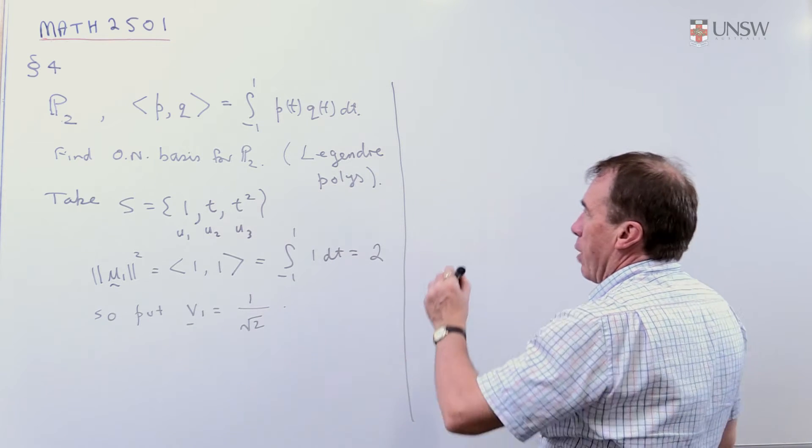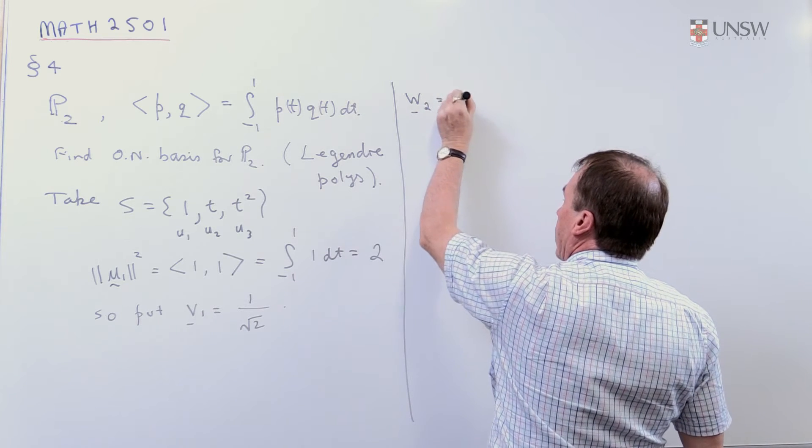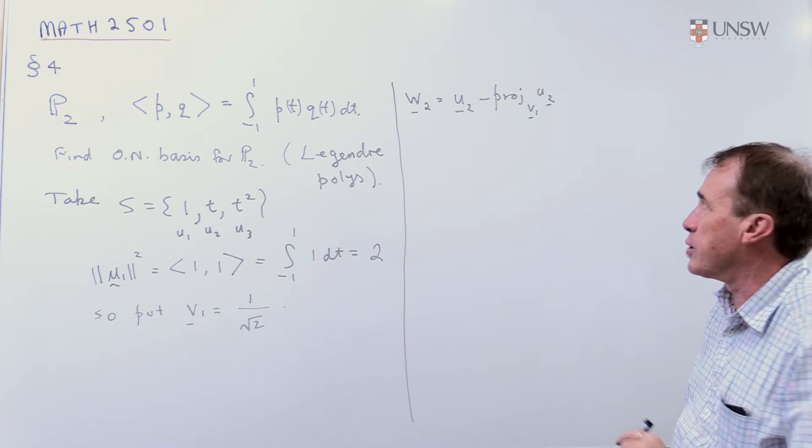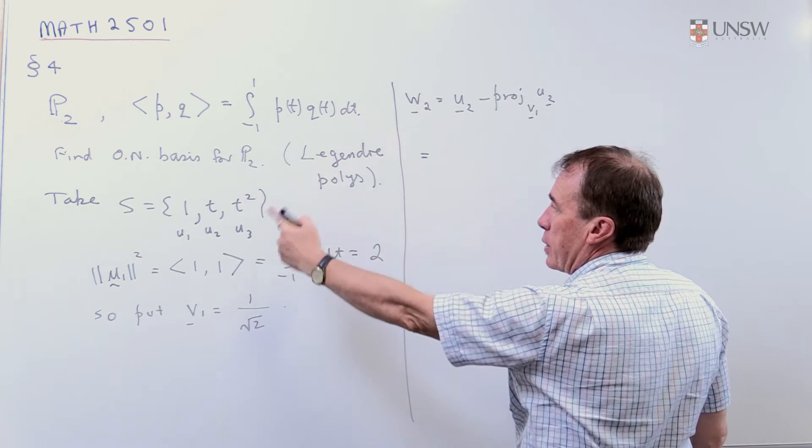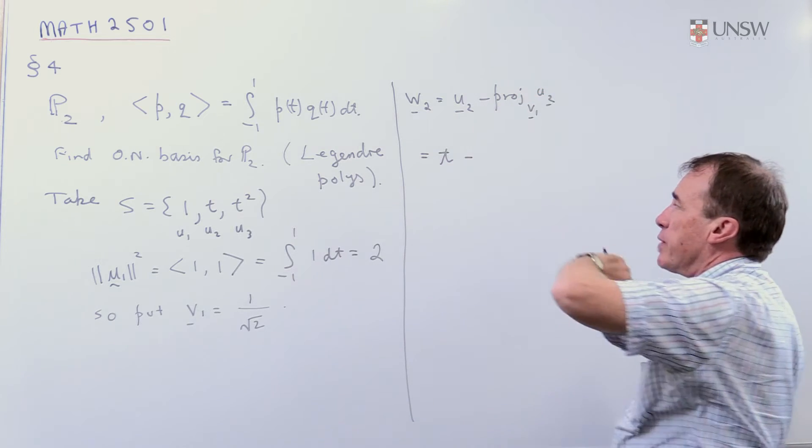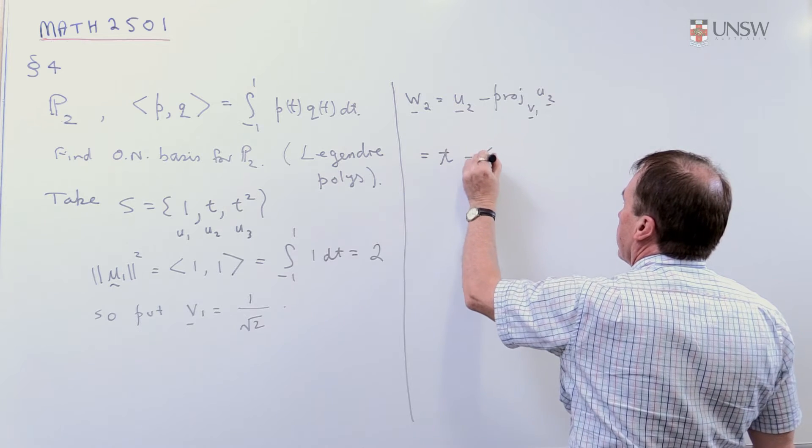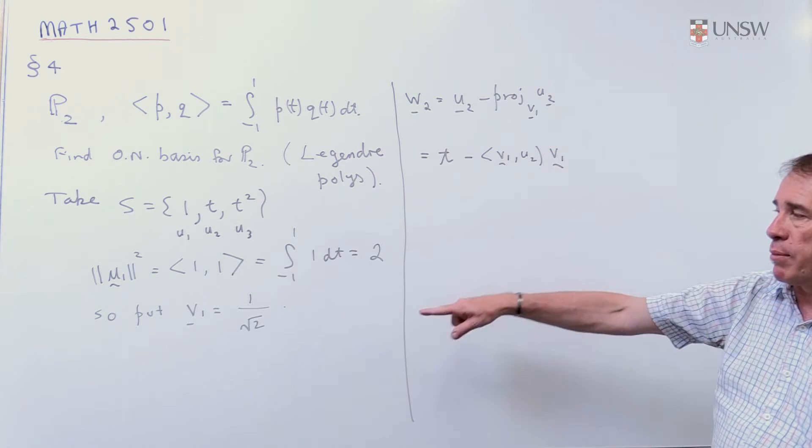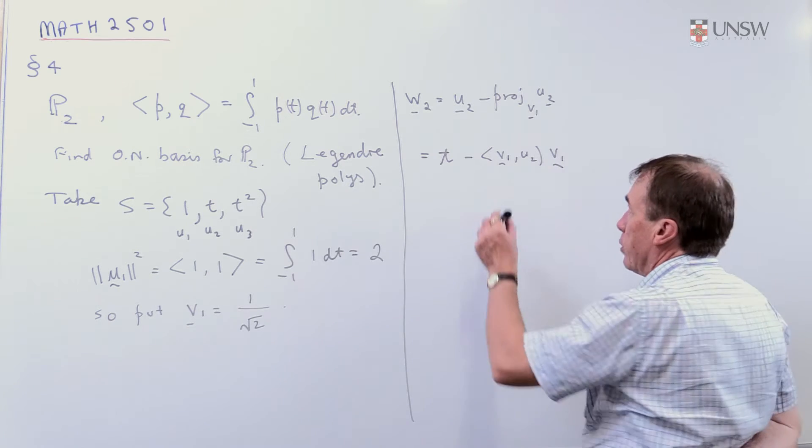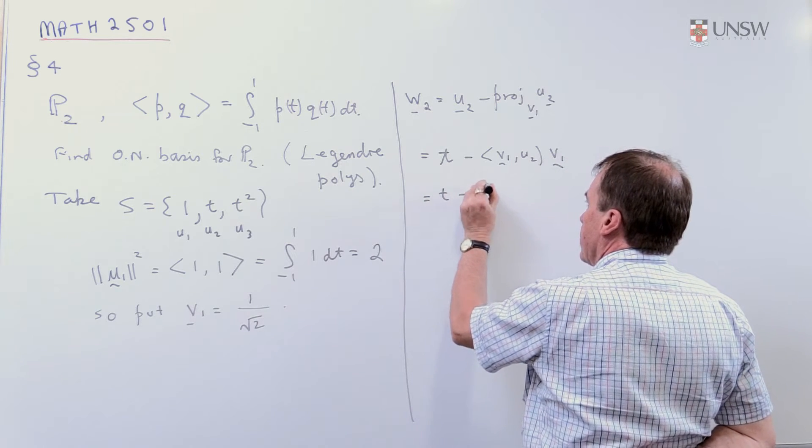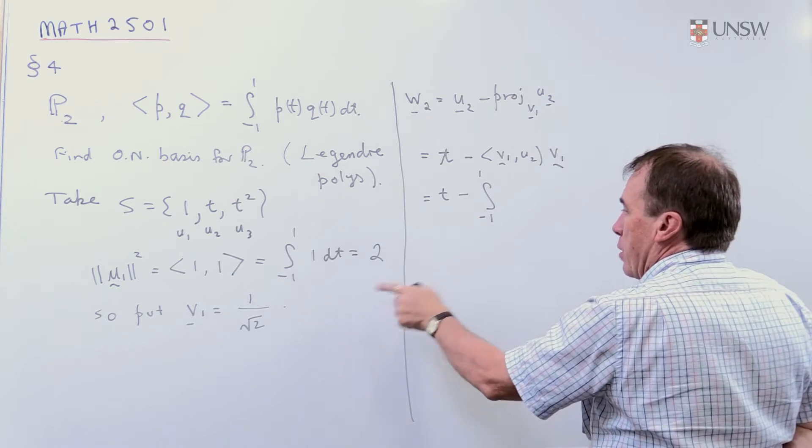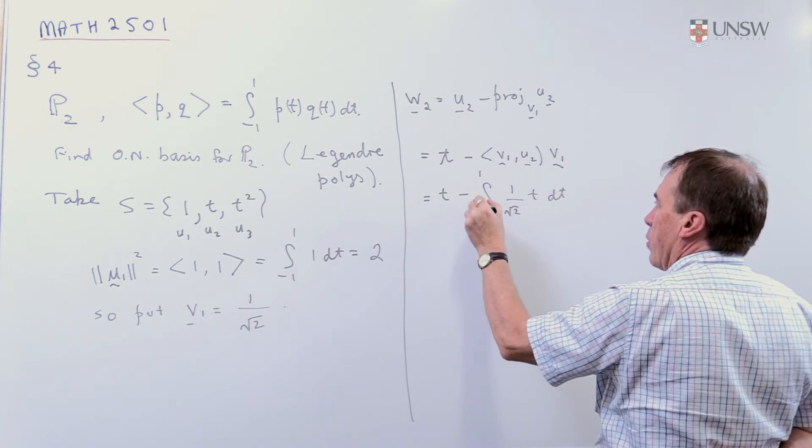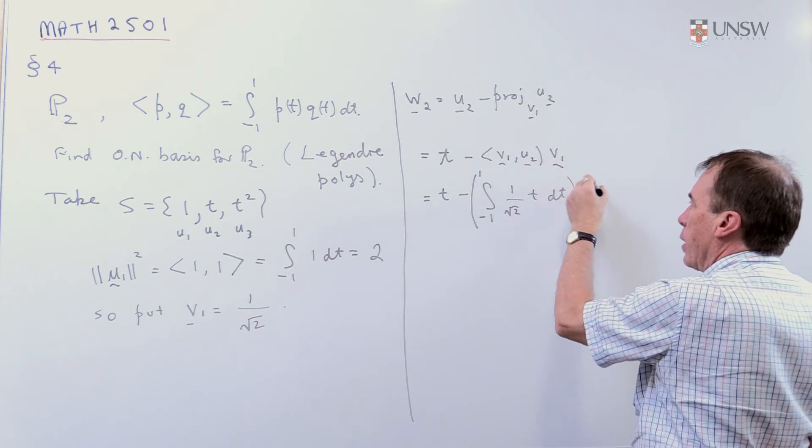Now, in the Gram-Schmidt algorithm, I am now going to take a vector I'm going to call W2. So I take U2 minus the projection of U2 onto V1. That's our first step in our Gram-Schmidt process. So U2 starts like this. That's my T. Now, to get the projection of that onto that, I have to take the inner product of V1 and U2 times the vector V1. We don't need to divide by the length of V1 because we've already made it into a unit vector. So the formula is a bit easier when you normalise as you go. So that's T minus. Now, the inner product is the integral minus 1 to 1. So I have a 1 on root 2 for the V1, and my U2 was the vector T, DT. So that's the coefficient multiplied by that one, which is 1 on root 2.